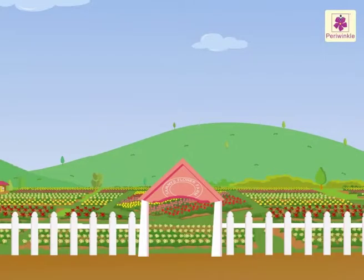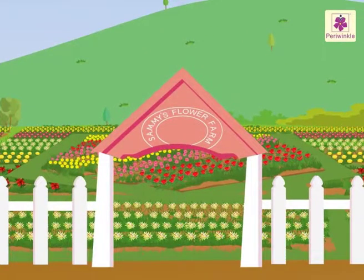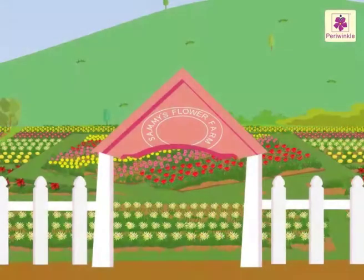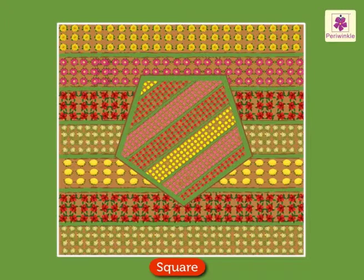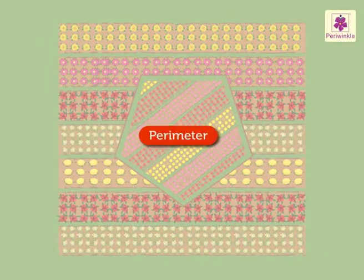Hey friends, we are at a flower farm. Let's learn about perimeter with this flower farm. The flower farm is square shaped. Before we begin, let's understand the meaning of perimeter.